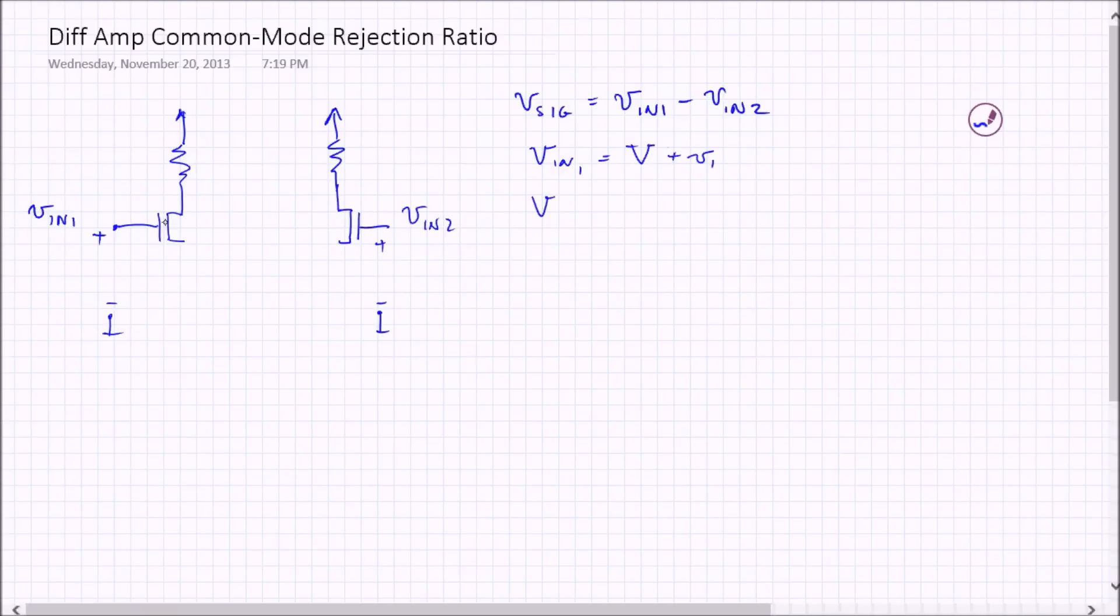A DC component, which is going to be the same, plus a small signal component. So we write that as capital V plus V2. And we're going to assume that each of these MOSFETs is the same, so they have the same K and VT values. Of course, they can never be perfect, but just for purposes of this analysis, we'll imagine that they're perfect.